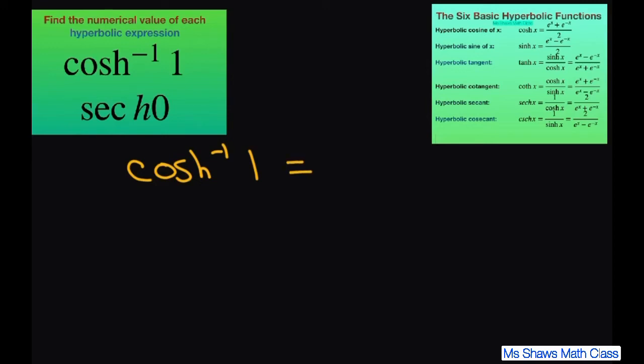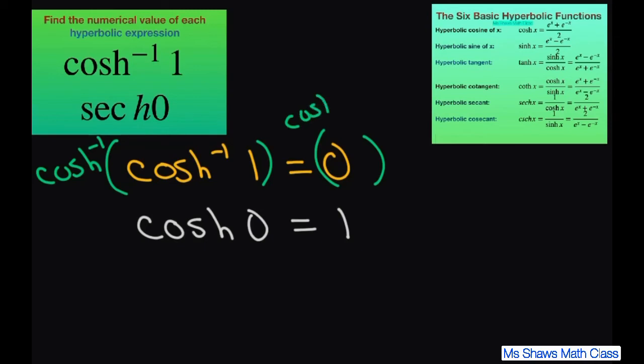And we're going to write this as equal to 0 because from our previous slide, we know that hyperbolic cosine of 0 equals 1. So basically when you're doing the inverse of both sides here, and you multiply each side by hyperbolic cosine, these will cancel. And then you just get this. And that's it.